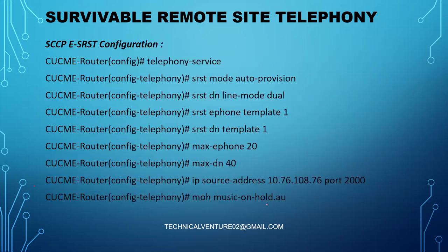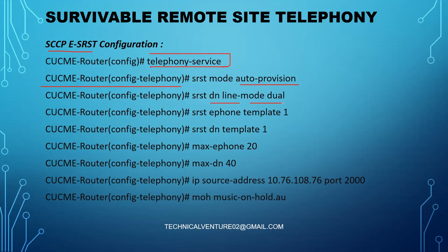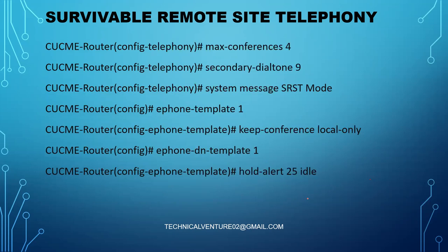For SCCP e-SRST configuration, use the 'telephony-service' command. Once under config-telephony, add: 'srst mode auto-provision', 'srst dn line mode dual', 'ephone-template 1'. You can define templates and types. For the directory number template use 'ephone-dn-template', along with 'max-phone', 'max-dn', IP address, 'moh', 'max-conferences', 'secondary-dialtone', and 'system message' — the same parameters discussed previously.